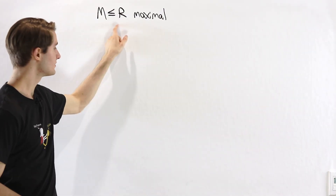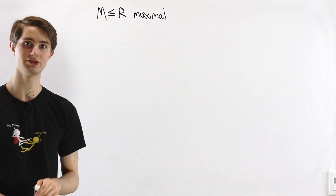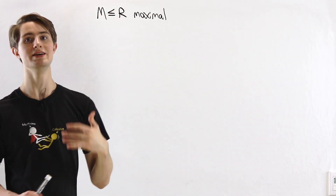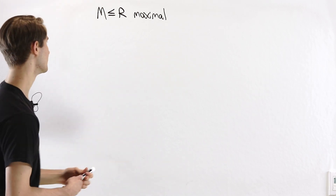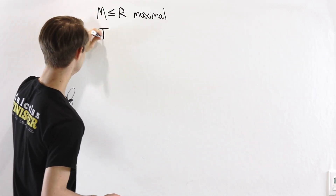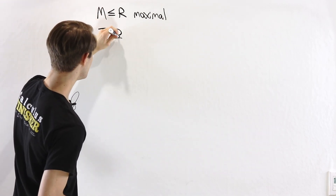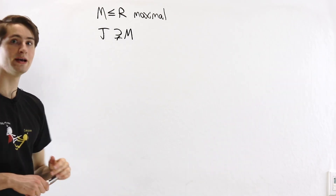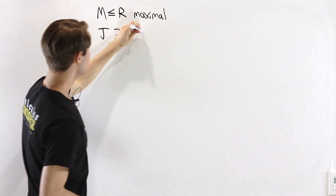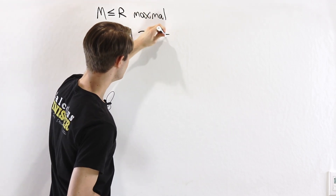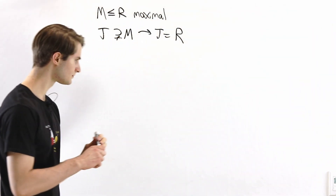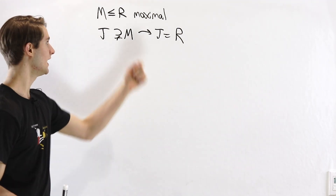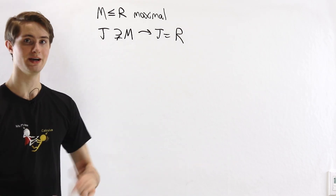Now we'll do a similar process with maximal ideals. Suppose we have some maximal ideal m in our ring R. What is the definition of a maximal ideal? It's equivalent to saying that if we have some ideal j which is a proper superset of m — an ideal containing m and at least one other element — then j must be the entire ring r.